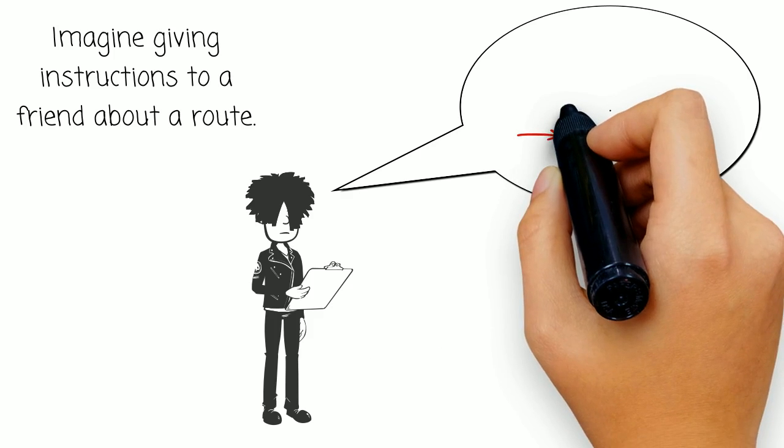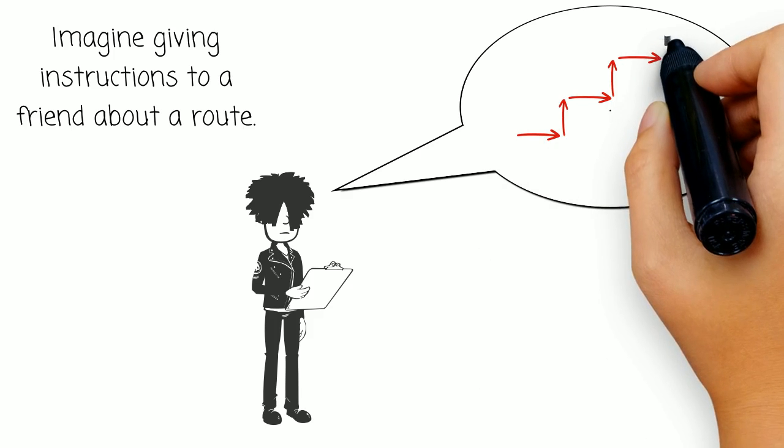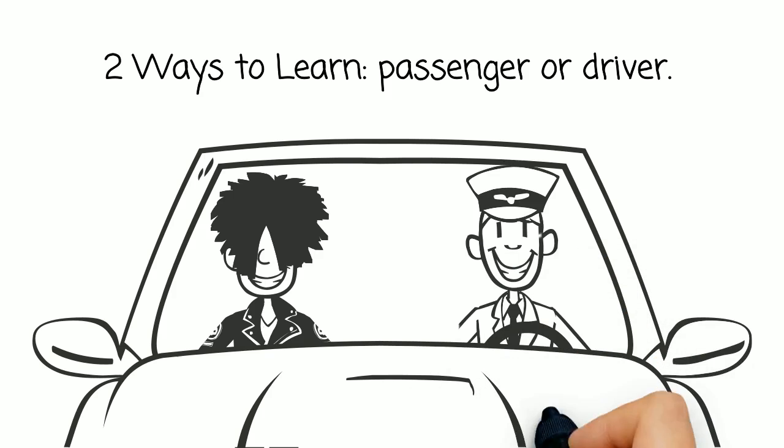To see why, imagine having to give driving instructions to a friend about a route that you don't know yourself. You have two ways to learn the route. You can be a passenger or you can drive yourself.